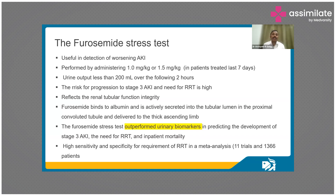The expected response: if urine output is more than 200 ml in the 2 hours following the furosemide injection, you would say the patient's kidney function is good. If it is less than 200 ml in 2 hours, you call it a positive test. This reflects the renal tubular functional integrity. Furosemide binds to albumin, is actively secreted into the tubular lumen in the proximal convoluted tubule, and delivered into the thick ascending loop. If given in stage 1 and stage 2 of AKI, this test predicts very well whether the patient is likely to progress to stage 3 or need renal replacement therapy, and correlates with inpatient mortality.